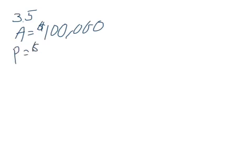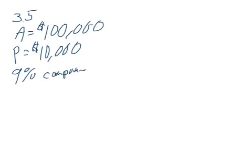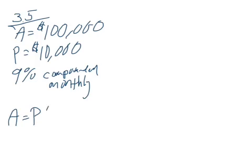So again, how long will it take to get $100,000? That's our A value. We want that to be $100,000. If you invest $10,000, that's your principal. So you want to get from 10 to 100 by investing at 9% compounded monthly. Our equation is A equals P times 1 plus R over N to the Nt power, where R is interest rate, N is number of compounds, T is time in years, A is the amount you want, P is the amount invested, the principal.